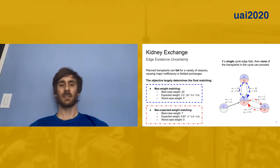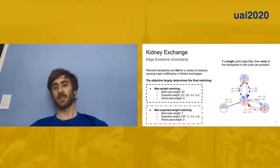Just to illustrate how the objective determines our outcome, we might decide to maximize the weight of a matching, just the simple deterministic weight. In that case, we would pick this two cycle, which would give us a total weight of 20 in the best case. But the expected weight of this matching is only 3.2, because both of these edges have a fairly high probability of failure. And in the worst case, one of these edges or both of these edges would fail, and we would receive zero weight.